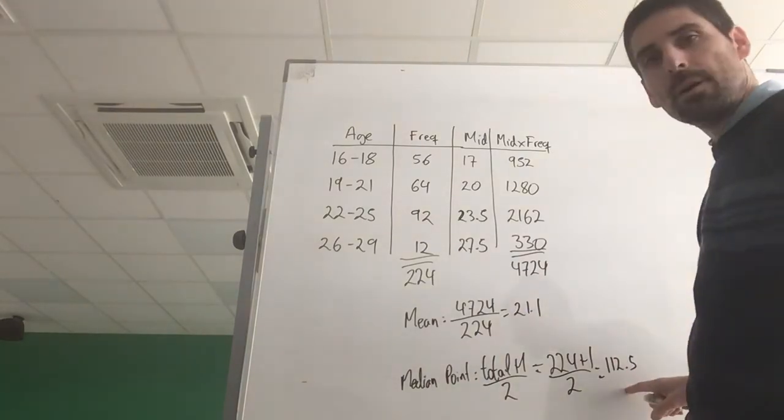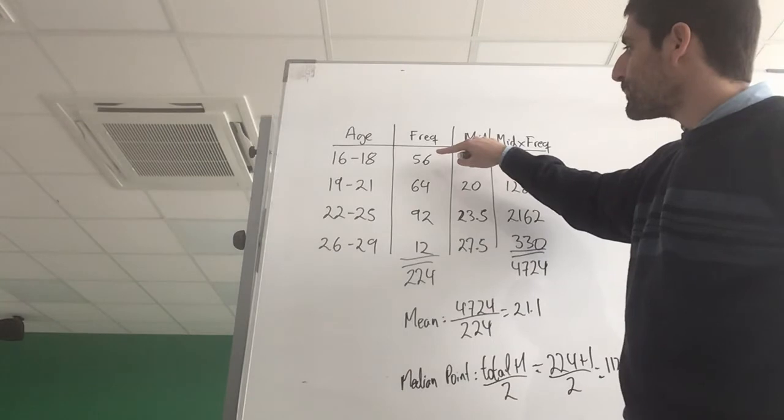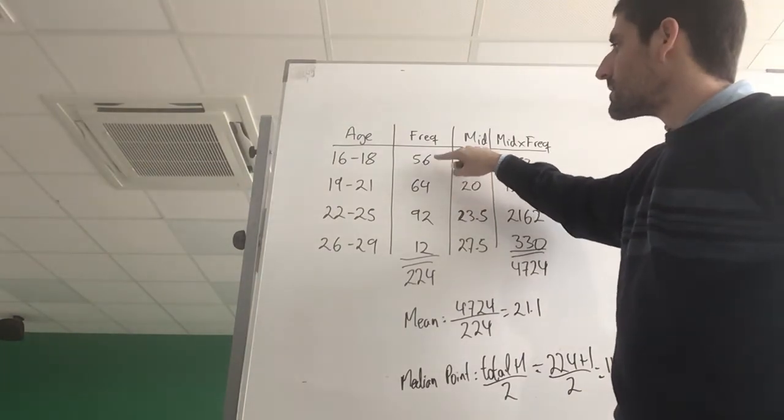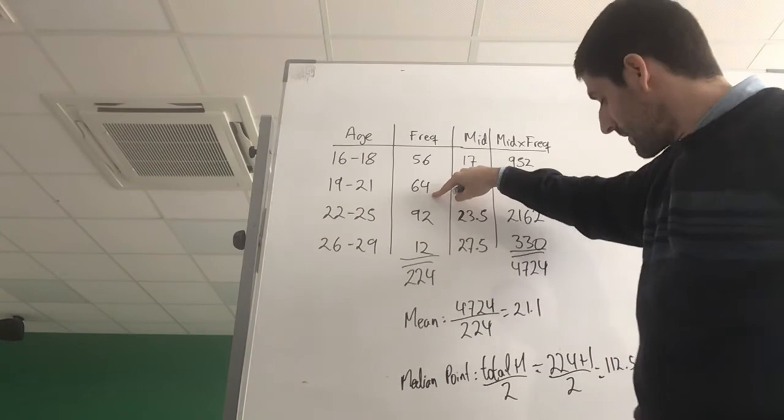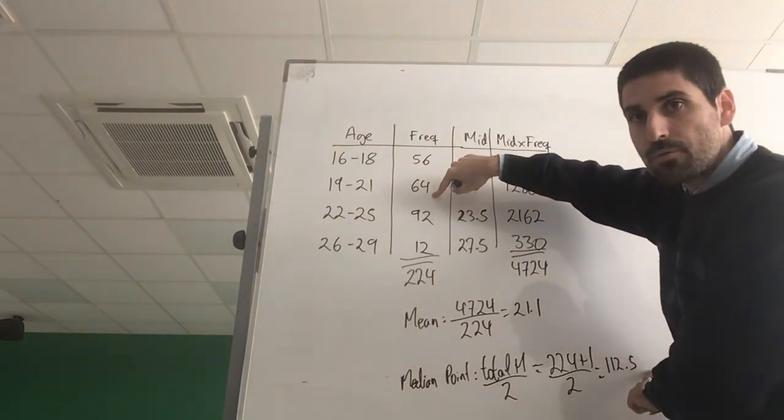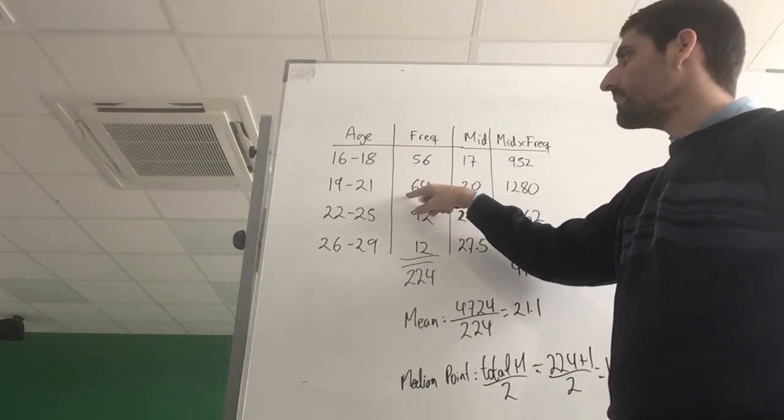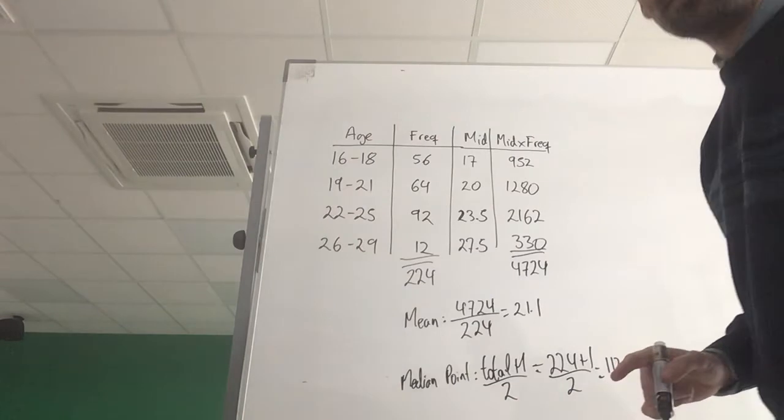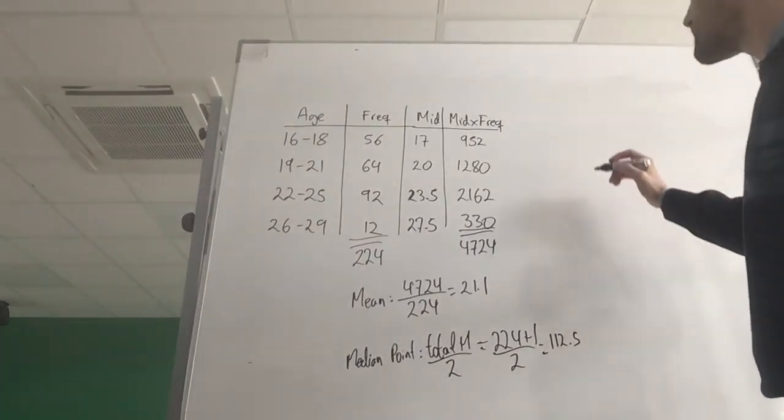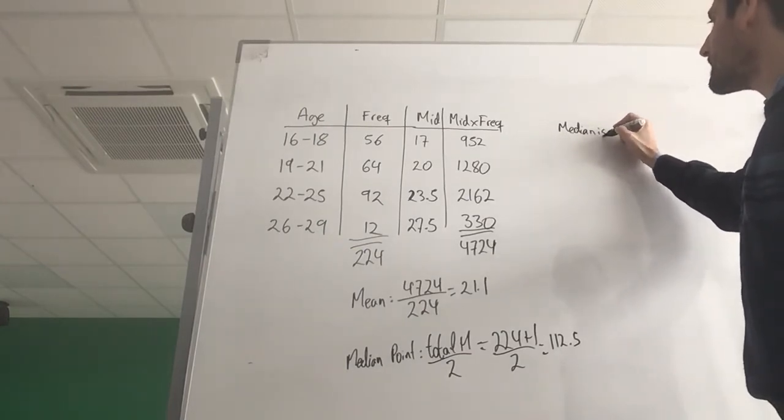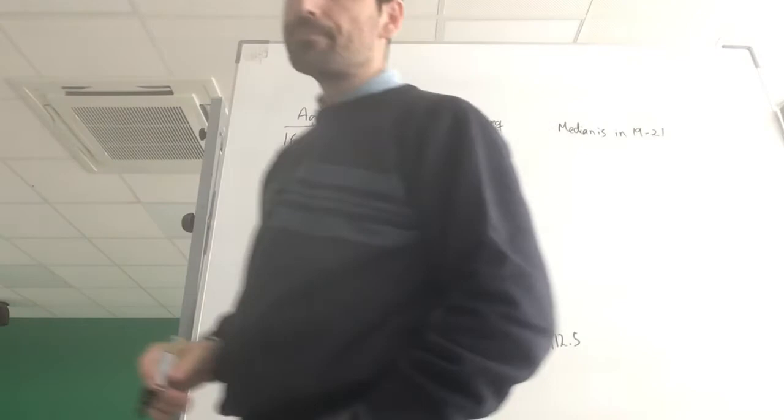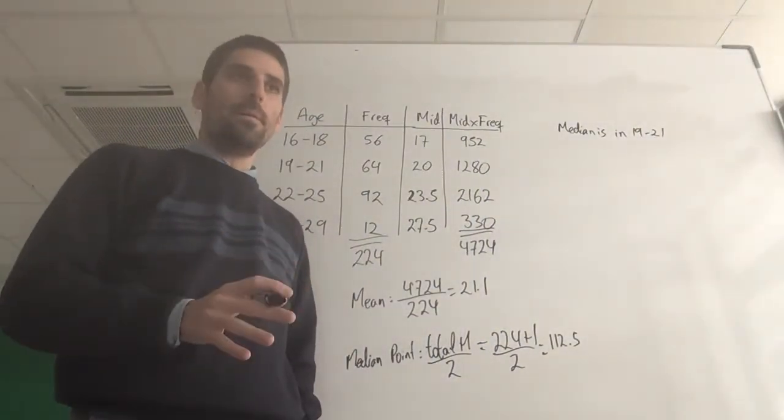So I need to find person 112.5. These two together adds up to 120, so that's the first 56 people. That takes me on the way to 120. If I'm only trying to find person 112.5, that person is going to be one of these 64. So the median is in the 19 to 21 range. So the median is somewhere in the 19 to 21.